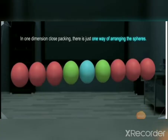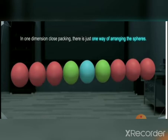Let us now consider close packing. In solids, the constituent particles are closely packed, so the vacant space will be minimum. Let the constituent particles be considered as spheres. First, consider close packing in one dimension. Here there is only one way of arranging the spheres — in a row where the spheres touch each other. Each sphere is in contact with two other spheres, so the coordination number is equal to two in one-dimensional close packing.